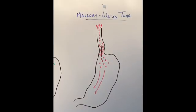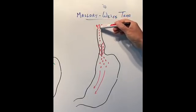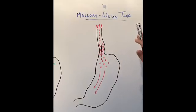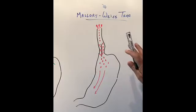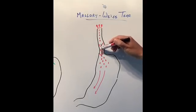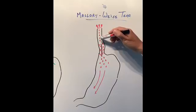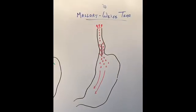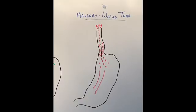The vast majority of Mallory-Weiss tears will settle down on their own. If the camera shows a tear that is not actively bleeding, it is left alone and nature takes its course. We need to control the patient's vomiting so they are not retching all the time. If it is still bleeding, the endoscopist can inject medication into it through the camera with a needle, which will hopefully stop the bleeding.